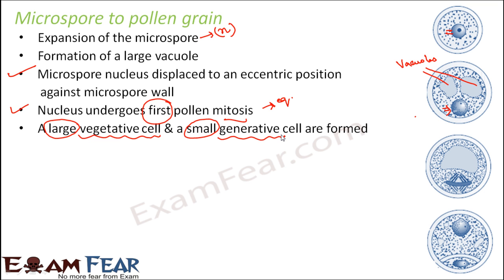So you can see the two cells on the screen — the bigger vegetative cell and the smaller generative cell. In approximately 60% of cases, the pollen grains are released at this two-cell stage. That means these two cells — the vegetative cell and the generative cell — are released as the pollen grains, and the pollen grains contain the male gametes.